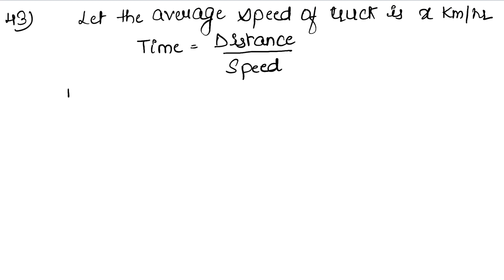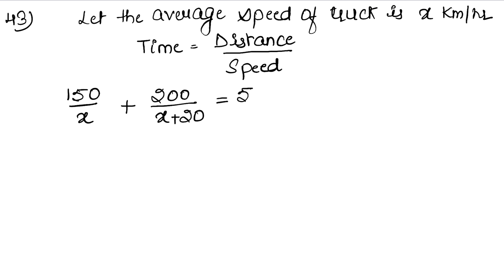The truck covers 150 km at speed x, and 200 km at a speed which is 20 km per hour more, i.e., x plus 20. Using the formula time equals distance upon speed, we set up the equation. Both distances are covered in a total of 5 hours, so we add the two time expressions.